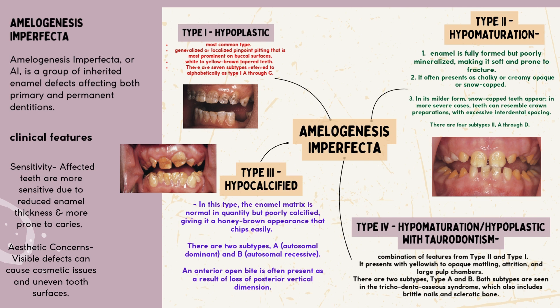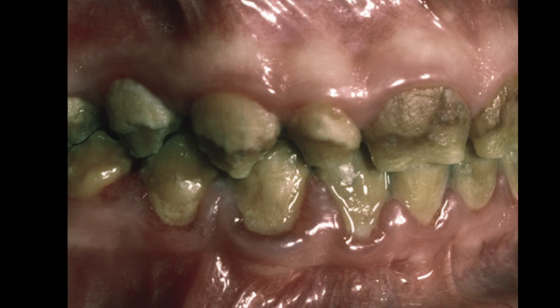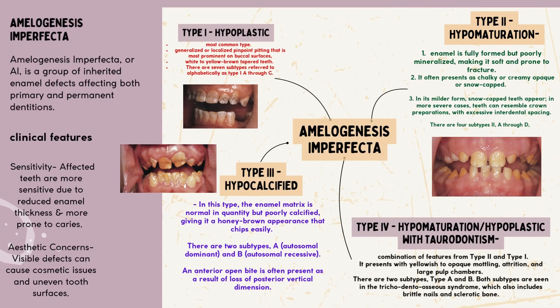Type III: hypocalcified. In this type, the enamel matrix is normal in quantity but poorly calcified, giving it a honey-brown appearance that chips easily. There are two subtypes: A, autosomal dominant, and B, autosomal recessive. Developing and erupting teeth are normal in shape with normal enamel thickness but with an unusual honey-brown color. Soon after eruption, the brown enamel undergoes severe chipping, leaving a roughened brown dentinal surface with some enamel remaining, especially at the gingival margin.